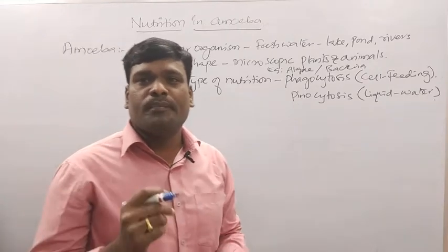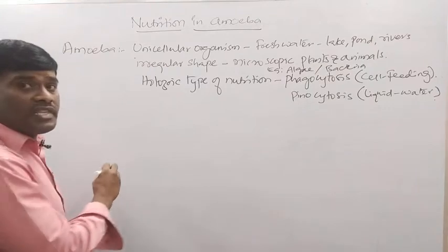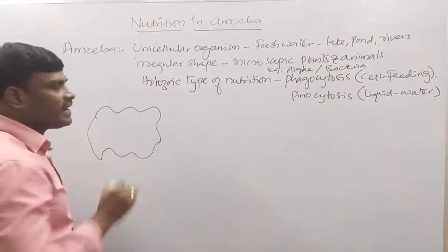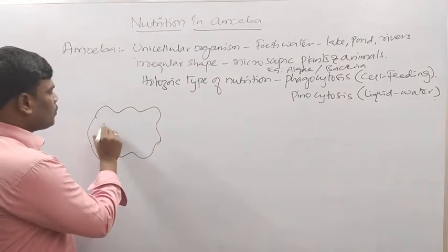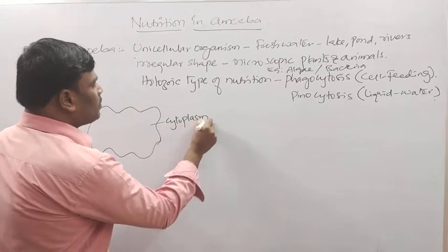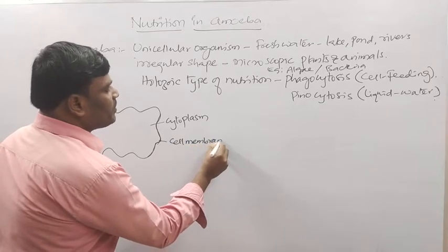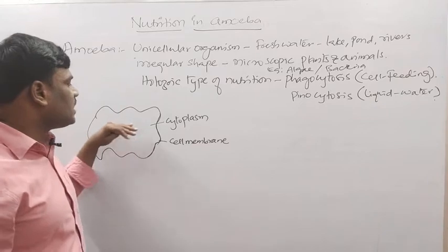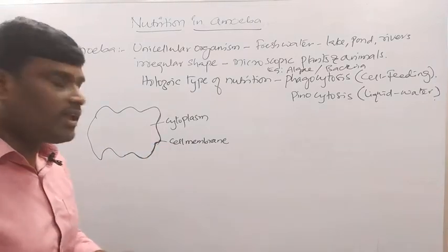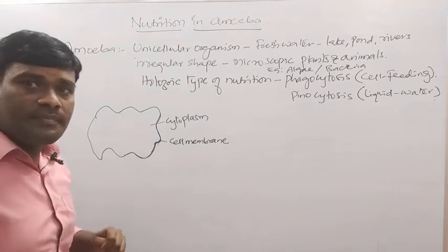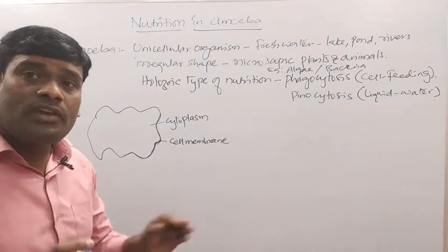If you see the structure of amoeba, it is irregular in shape with no specific shape. The inside liquid part is called cytoplasm. Cytoplasm is bounded or covered by the cell membrane. Just inside the cell membrane is the ectoplasm, and deeper inside is the endoplasm. Most cell organelles are situated in the endoplasm.